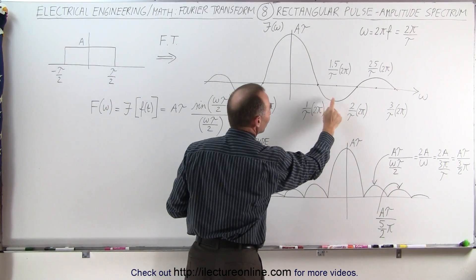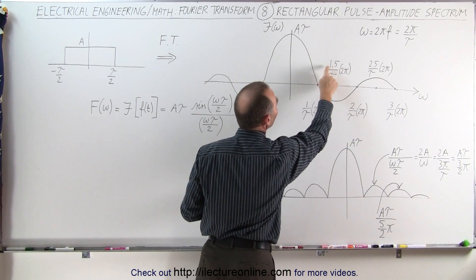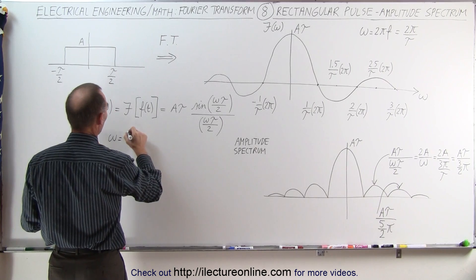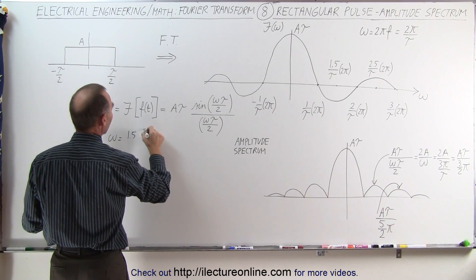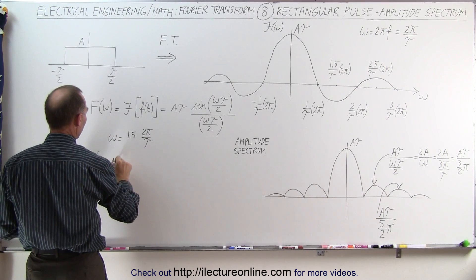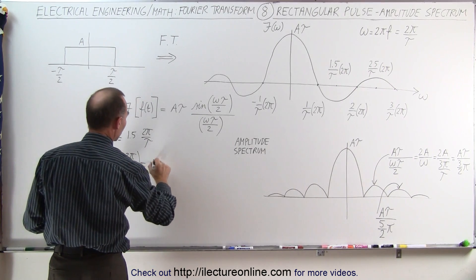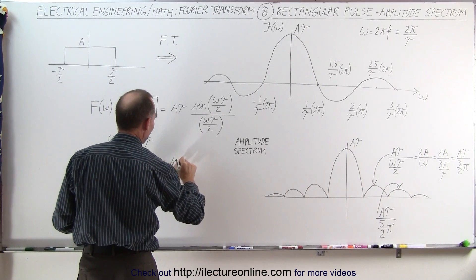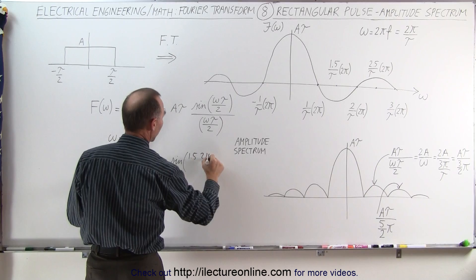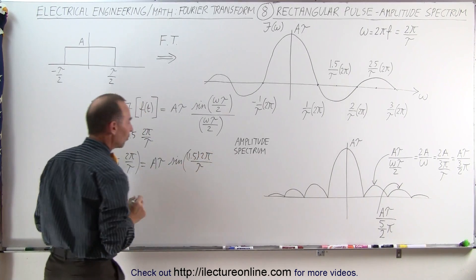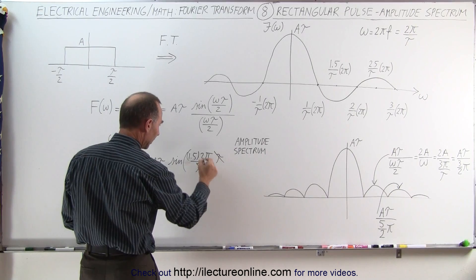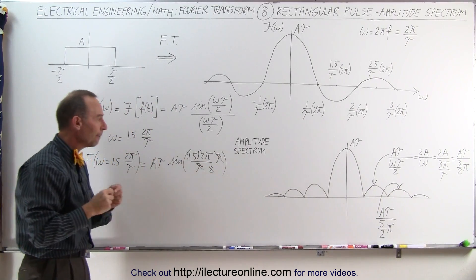What about the amplitude over here? There, omega is 1 and a half times 2 pi over tau. So let's plug that in. When omega equals 1.5 times 2 pi over tau, the function equals A times tau times the sine of 1.5 times 2 pi over tau times tau divided by 2. The tau's cancel and we end up with 1 and a half times pi — that's 270 degrees.